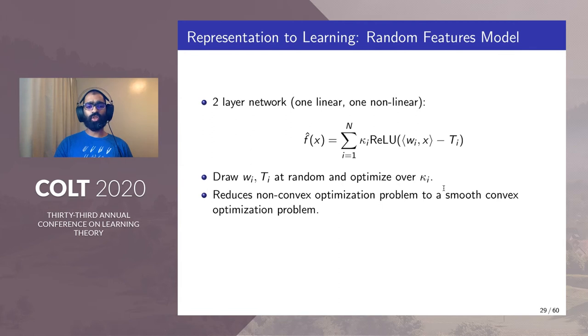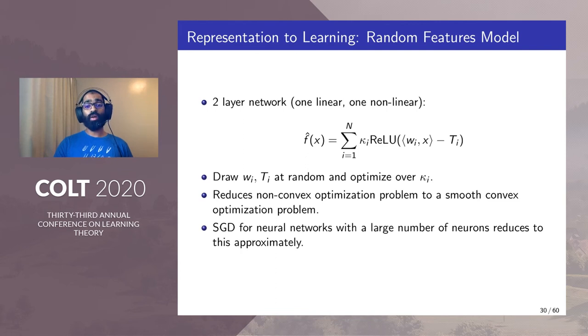This reduces a non-convex optimization problem to a smooth convex optimization problem. And SGD for neural networks with large number of neurons reduces to this approximately because inner weights don't change appreciably for a large number of iterations.